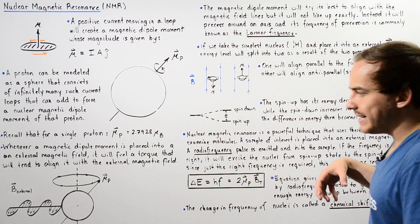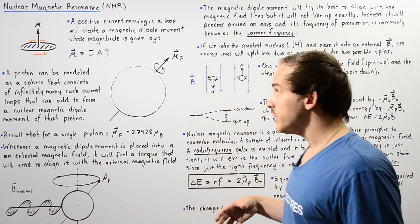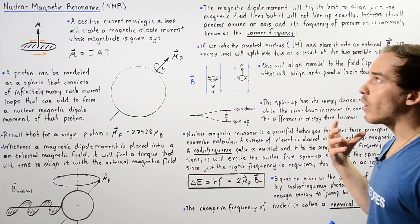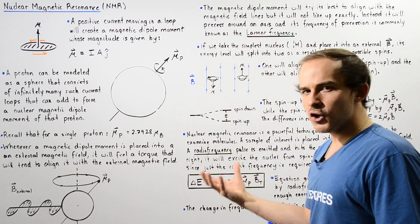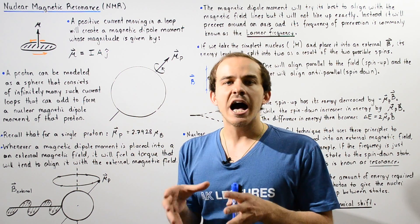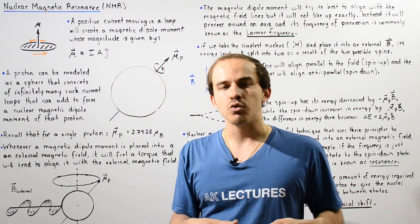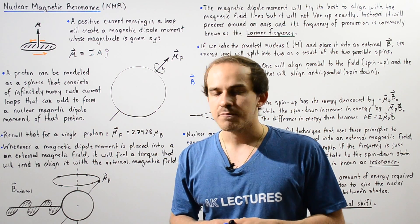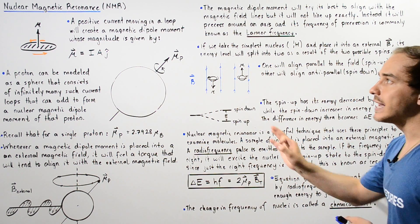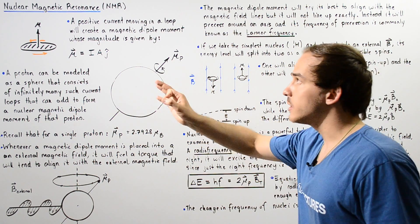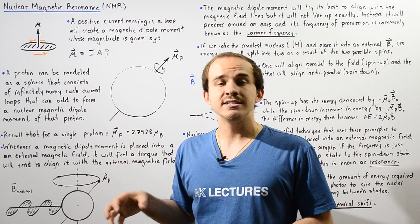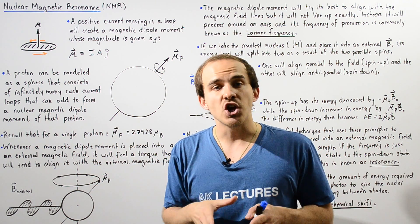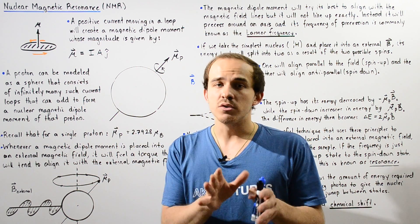In chemistry, we can use this nuclear magnetic resonance technique to determine the types of compounds and molecules we are dealing with. We can also apply this nuclear magnetic resonance technique in medicine, where it is known as MRI, which will be discussed in the next lecture.